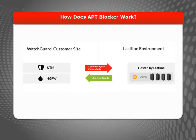Unlike other traditional scanners, APT Blocker doesn't rely on signatures to prevent malware. Instead, APT Blocker scans files that are destined for your network and generates an MD5 hash of the file. This hash file is then submitted to the Lastline cloud-based data center.